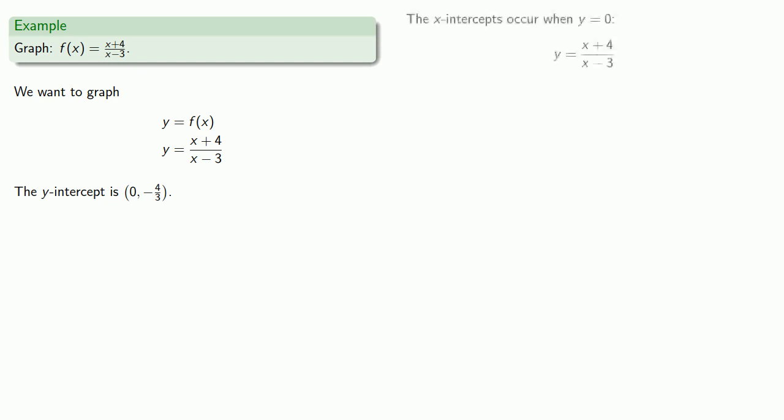The x intercepts occur when y is equal to 0. So again, equals means replaceable, and we'll replace y with 0. Now we have to do a little bit more work to solve this equation. Since we have this denominator x minus 3, we'll multiply both sides by the denominator and then solve the resulting equation. Again, the x intercept is a point, so we have to specify both the x and y coordinates. The x intercept is (-4, 0).